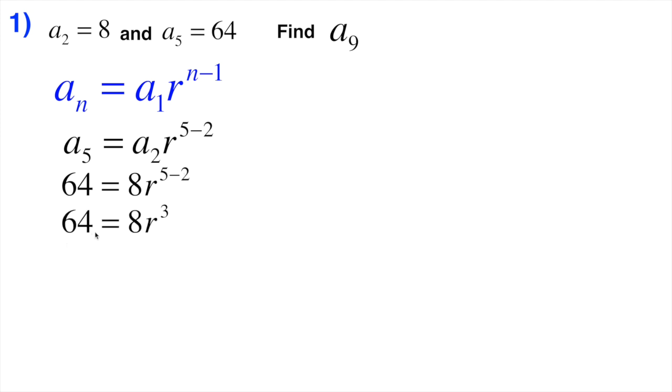So now I know that 64 equals 8 times this r value cubed. I still don't know what r is yet, so I want to get r all by itself. So the way we do that is we're going to divide both sides by 8. 64 divided by 8 is 8. So now I know that r³ is equal to 8. Well, the way that I get rid of this cubed is I can take the cube root of both sides. If I take the cube root of both sides, the cube root of 8 is just plain old 2. So now I know my r value.